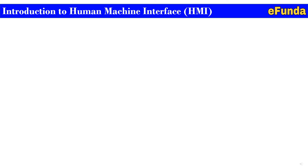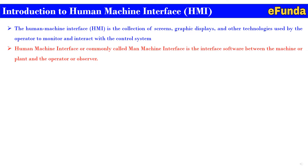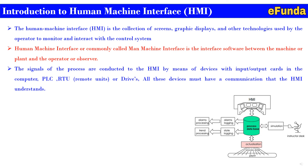Introduction to human machine interface, that is HMI. The human machine interface HMI is the collection of a screen, graphic display, and other technologies used by the operator to monitor and interact with the control system. Human machine interface, or commonly called man machine interface, is the interface software between machine or a plant and the operator or the observer. The signals of the process are connected to HMI by means of devices with input output card in computer PLC, RTU that is remote units or a drive. One can refer the connectivity diagram for HMI where you can see all the interfaces with respect to plant, actualization, process database and further to HMI.